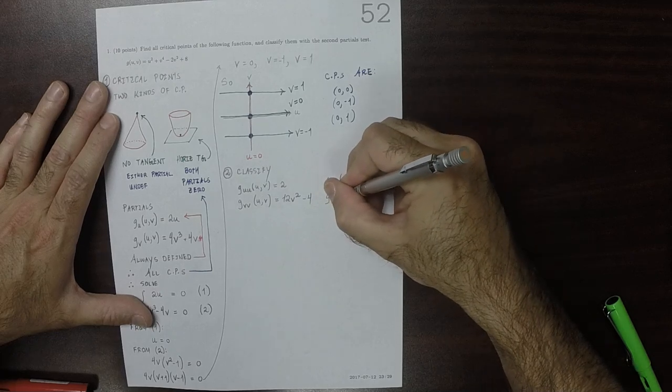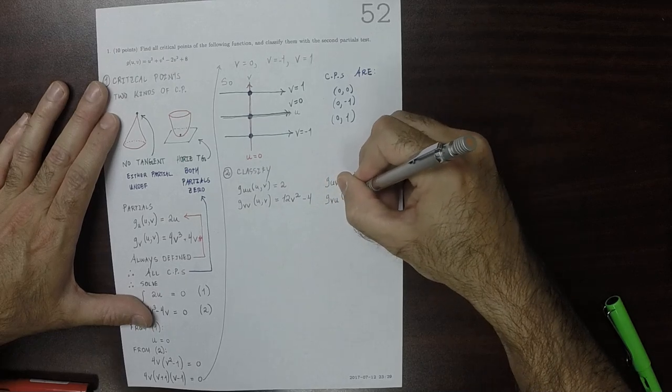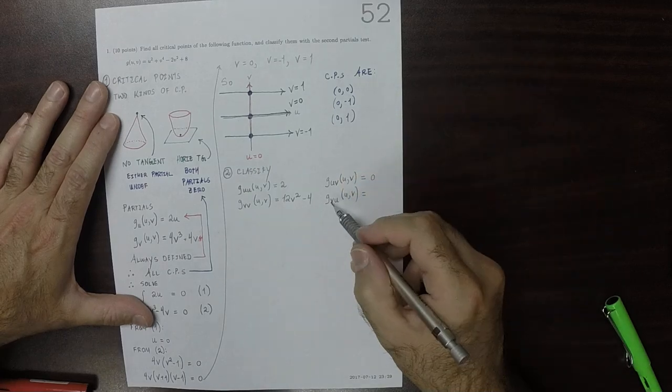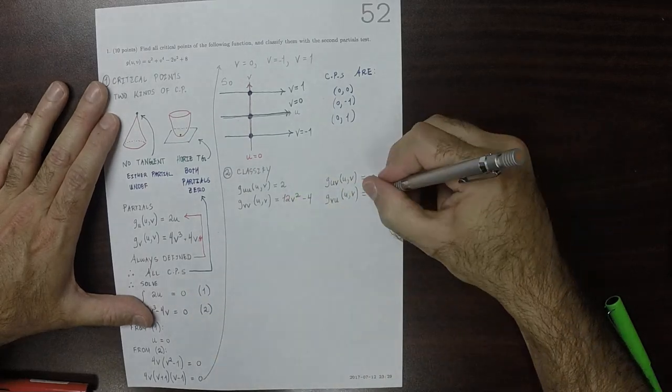And the V, U partial, which is first V, then U, is also zero.